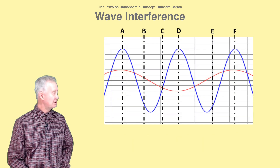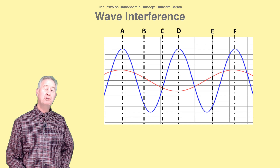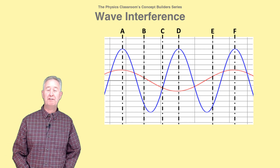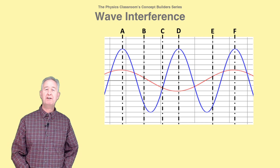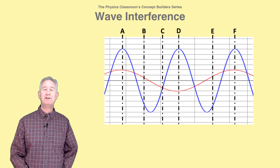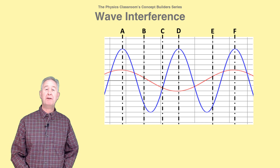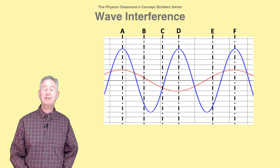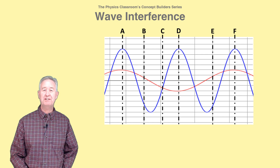This diagram shows two waves interfering. The rules for constructive and destructive interference are the same for waves as they are for pulses.